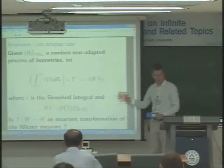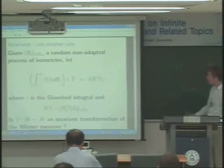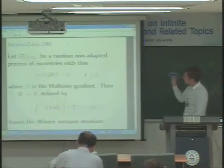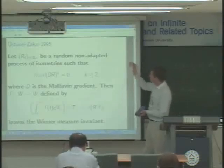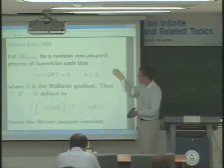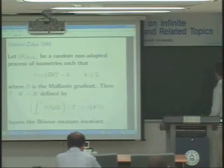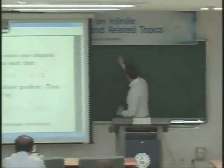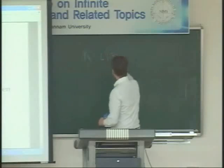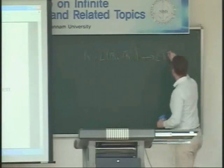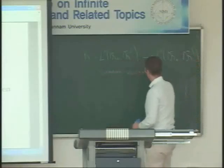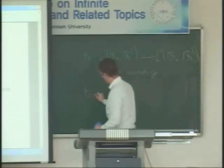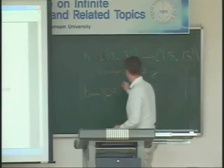Now the question becomes: can this define an invariant transformation of the Wiener measure? We know this holds when r is an adapted process of isometries. What happens in the anticipating case? There is an answer given by Üstünel and Zakai in 1995. They said that in case r is a possibly non-adaptive process of isometries, and the trace of Dr to the power k is zero almost surely...